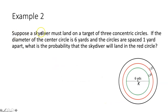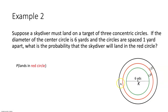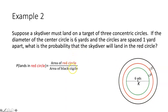Example two: suppose a skydiver must land on a target of 3 concentric circles. If the diameter of the center circle is 6 yards and the circles are spaced 1 yard apart, what is the probability the skydiver will land in the red circle? We use the area probability ratio — area of the red circle over the area of the black circle — to determine this probability.